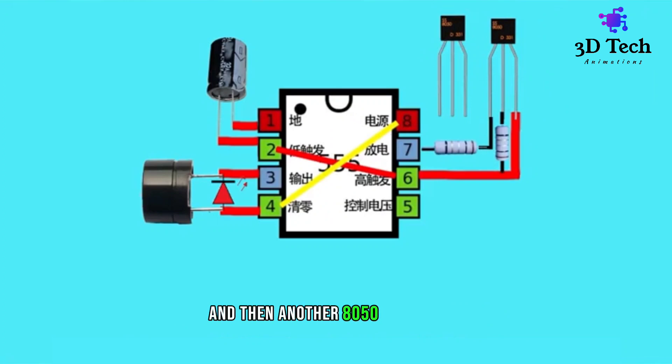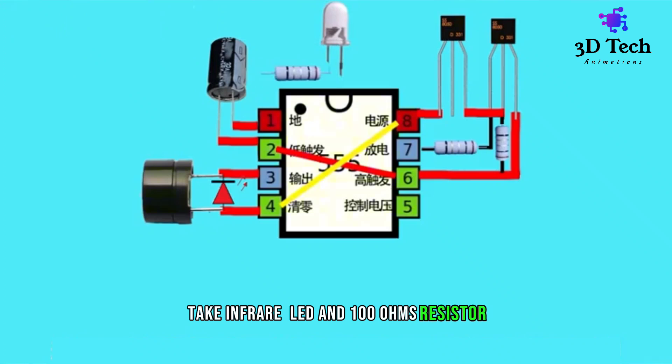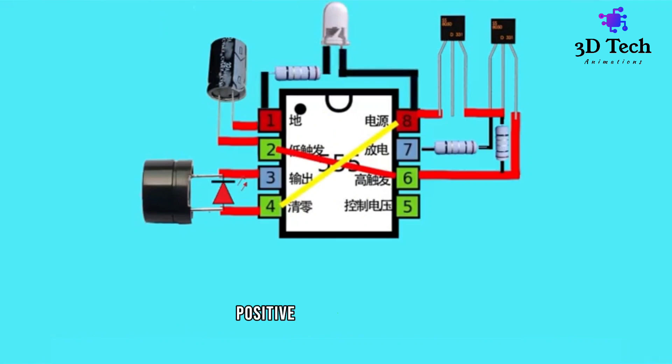And then another 8,050 transistor. Emitter connected to pin 8. Collector connected to another transistor base. Take an LED and 100 ohm resistor. LED negative is connected in series with a 100 ohm resistor at pin 1, positive connected to pin 8.